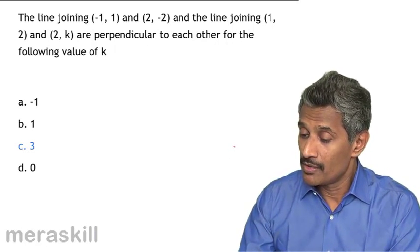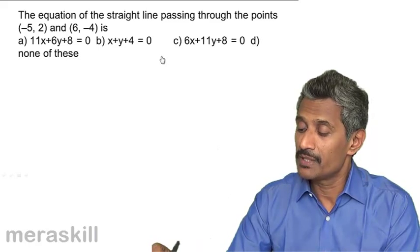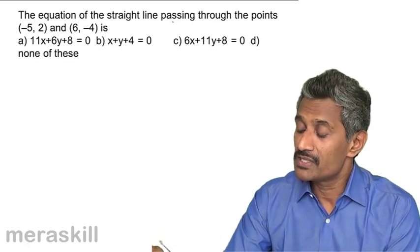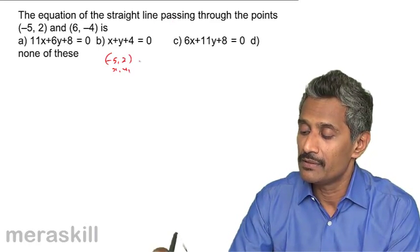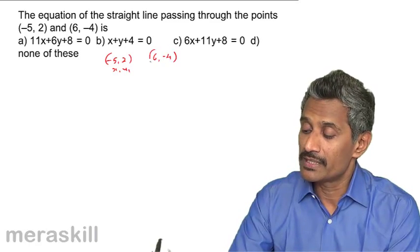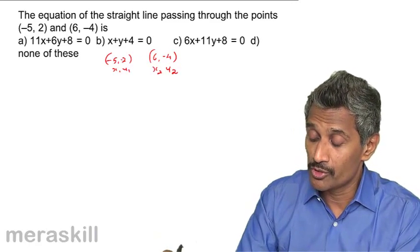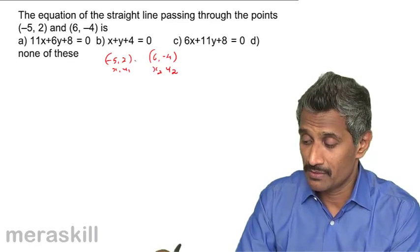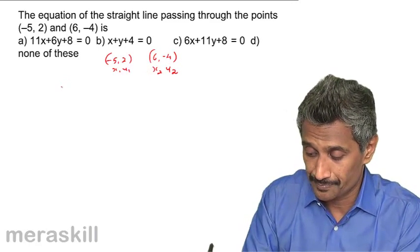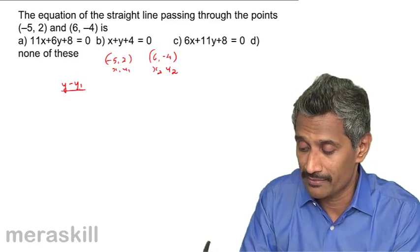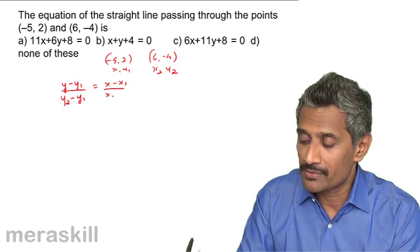Next problem: find the equation of the straight line passing through minus 5 comma 2, taken as x1 y1, and 6 comma minus 4, taken as x2 y2. We don't know the y-intercept but we know two points, so we use the two-point form: y minus y1 upon y2 minus y1 equals x minus x1 upon x2 minus x1.